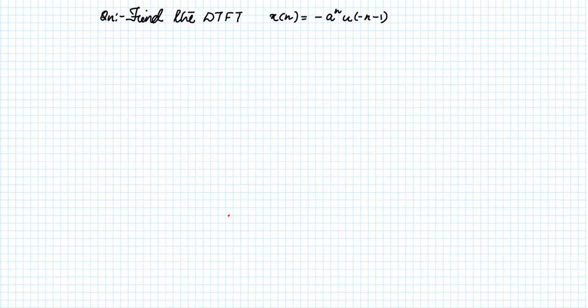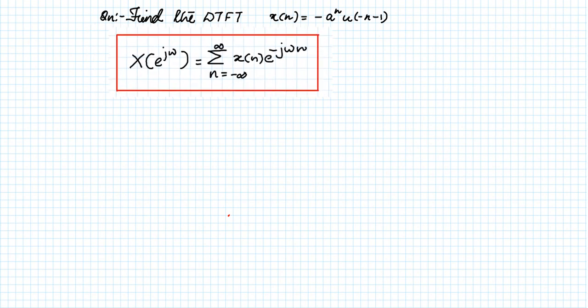We can discuss another question, which is to find the DTFT of a signal x of n equal to minus a raised to n, u of minus n minus 1. So we need to find the Discrete Time Fourier Transform of the signal. The general formula for calculating the DTFT is: X of e raised to j omega equals sigma, n equals minus infinity to infinity, of x of n times e raised to minus j omega n. In place of x of n, it is given as minus a raised to n, u of minus n minus 1.